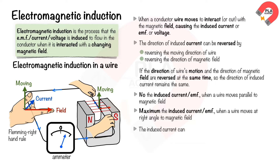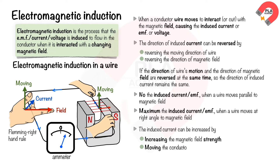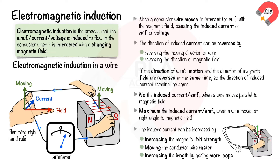The induced current can be increased by increasing the magnetic field strength, moving the conductor wire faster through the magnetic field, or increasing the length of the conductor wire that interacts with the magnetic field by adding more loops.